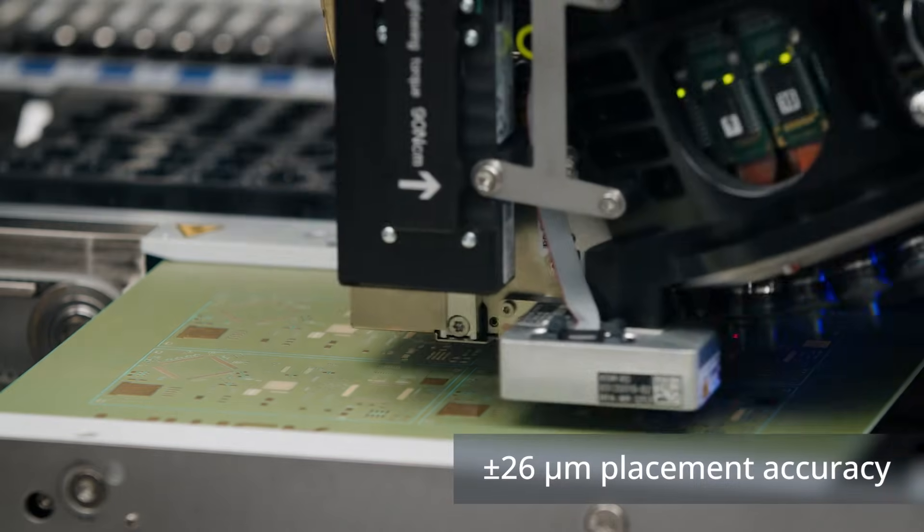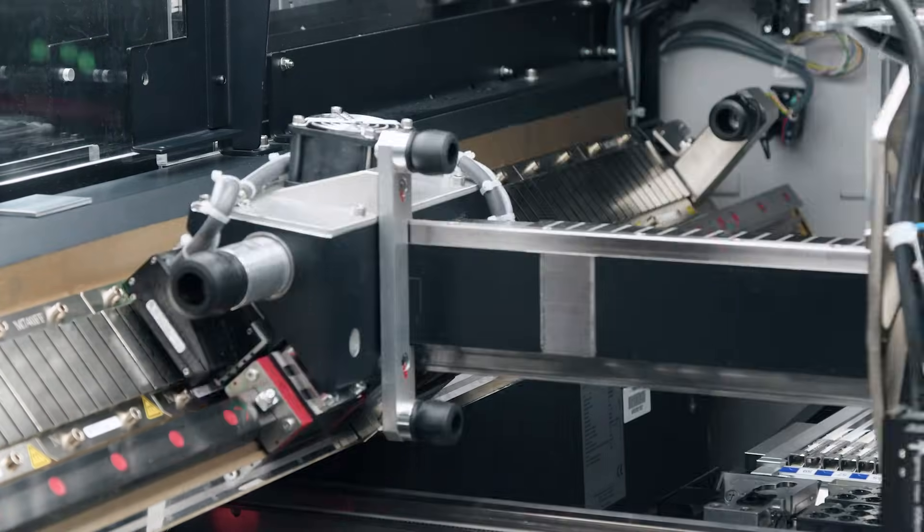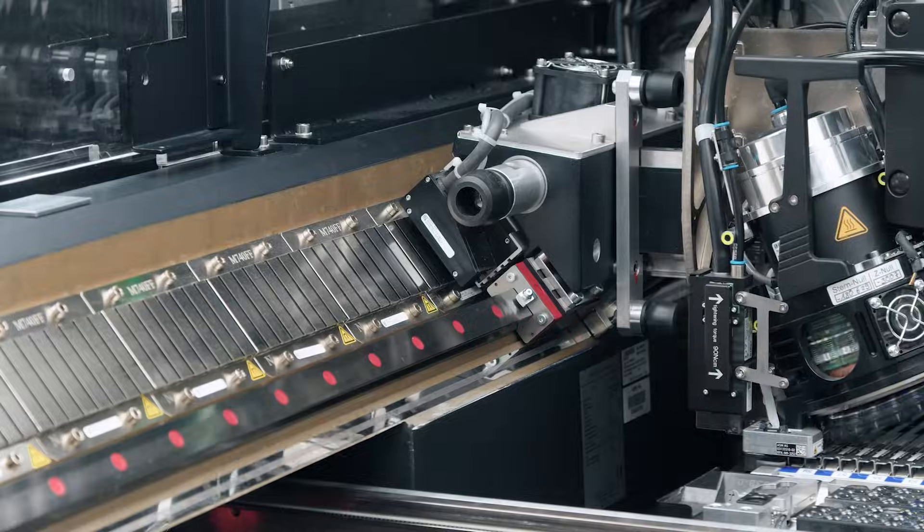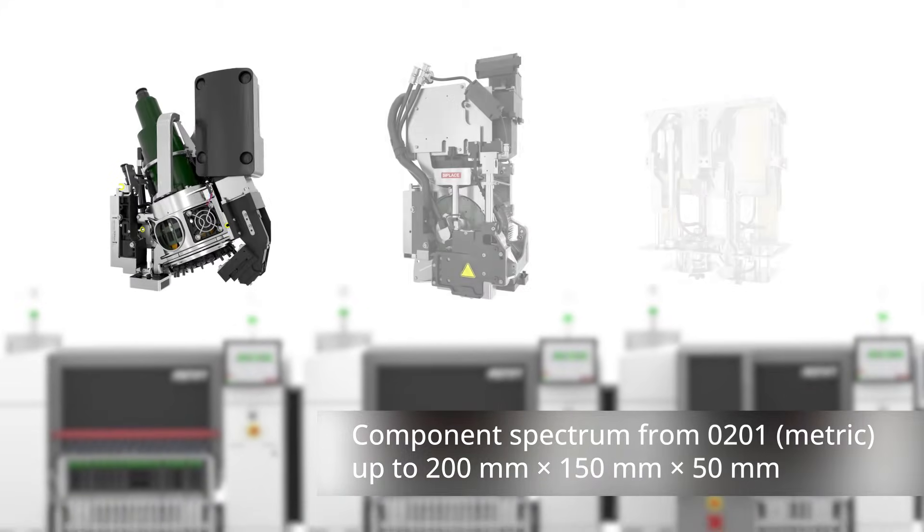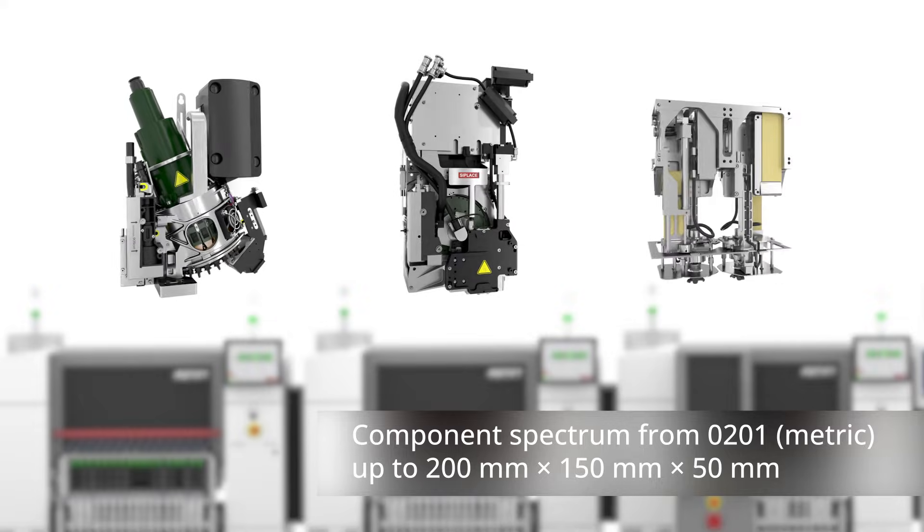You can always be sure that your most intricate components will be handled with care. Engineered for high-mix production environments, the C Place SX offers three placement heads that handle everything from ultra-small metric 0201 to large complex components.